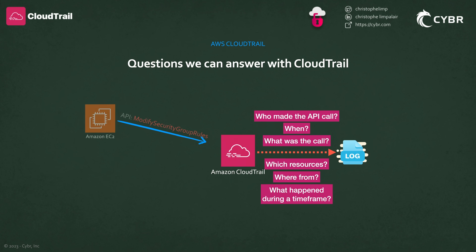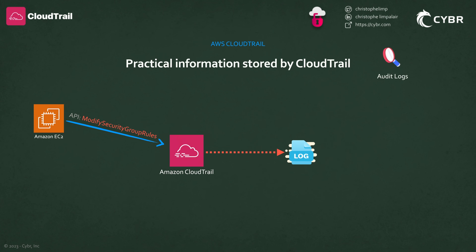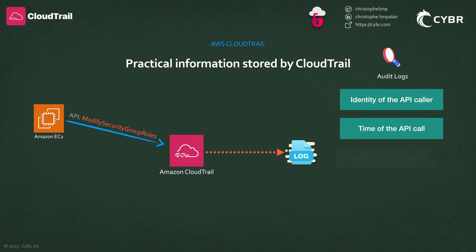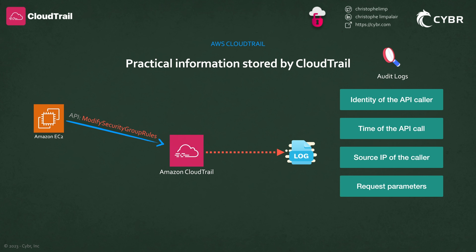As an example, if I make a change to an EC2 instance, even if that change was made through the AWS console, it's still making calls to the AWS API, which means that CloudTrail would be able to see it and log it. You can find out information like the identity of the API caller, the time of the API call, the source IP address of the API caller, the request parameters, and response elements returned by the AWS service.